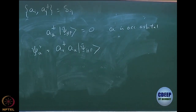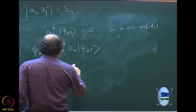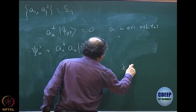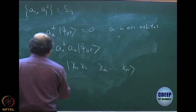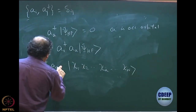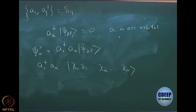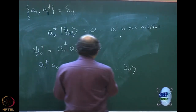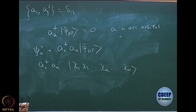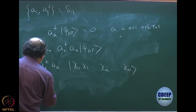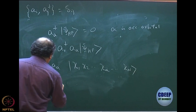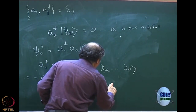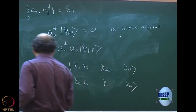Let us see how it works. I have a determinant which is chi-1, chi-2, etc., and here is chi-A. I want A_R-dagger A_A to act on this. Before I do this, I use my trick: I interchange chi-1 and chi-A — just one interchange. So this becomes minus A_R-dagger A_A, and this becomes chi-A, chi-2, chi-1, chi-N.